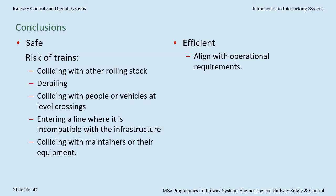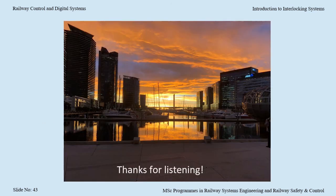In conclusion, we've seen that the interlocking is at the centre of the railway control system architecture, accepting requests from the signaller, inputs from the other subsystems, and checking that the requests are safe before actioning them. We've seen a sample of how, at the principles level, the interlocking mitigates the risk of trains colliding with other rolling stock, derailing, colliding with people or vehicles at level crossings, entering a line where it is incompatible with the infrastructure, or colliding with maintainers or their equipment. We've also seen that the railway control system, and hence the interlocking, needs to be matched with the operational requirements. Thanks for listening.